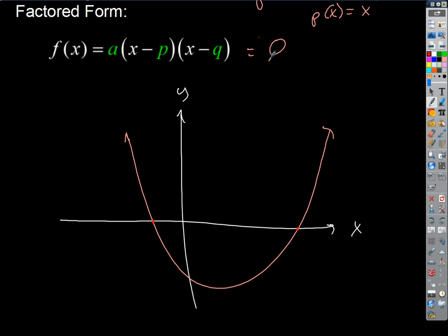The red parabola crosses the x-axis. How about the blue parabola? It doesn't cross the x-axis. So what are the zeros of that function? There are no real values of P and Q that make that one zero — we couldn't write it in factored form, we couldn't factor it. We can only write functions in this form if P and Q are real numbers. They could be complex numbers with imaginary parts, but usually when we write a function in factored form, we're trying to get real number values for P and Q.